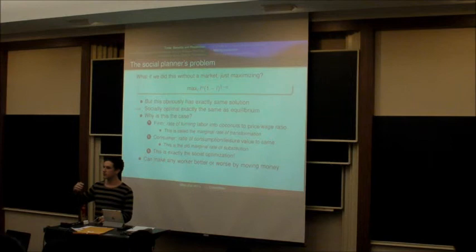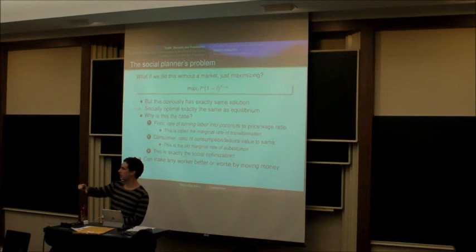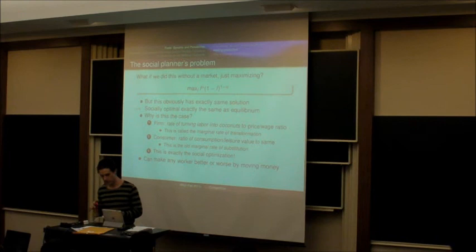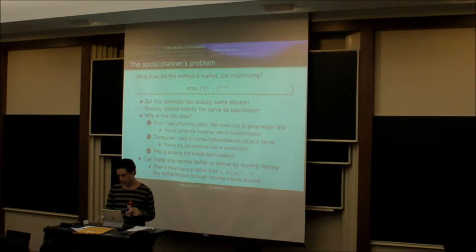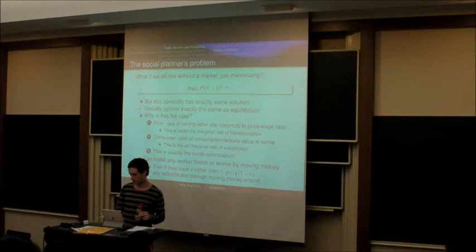And if there were more than one worker, we could make everyone, we could transfer any amount we want. We could take some coconuts from one guy and give them to the other, and everyone would set their marginal rate of substitution between work and eating coconuts to the ratio of the price of a coconut to the amount of wage that they get for work. So any redistribution can occur simply by moving money around from people. We don't actually need to tax work or the purchase of coconuts.